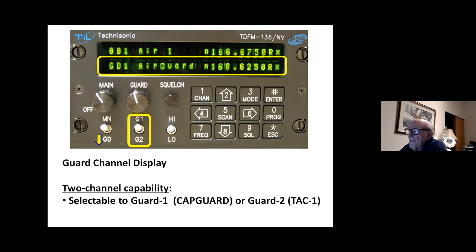Because sometimes you want to be able to transmit on TAC1 without dialing it into the radio, because you want to leave the repeater channel up on the radio. So that's just another feature, but just another thing to remember, that there's two different possibilities on the guard channel. So if you want to talk on CAP guard, you just need to make sure that that center switch is in the guard one position. So CAP guard in guard one, TAC1 in guard two.